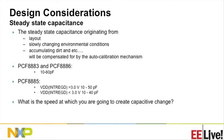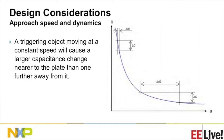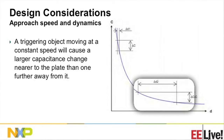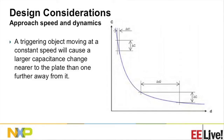The next question is the approach speed — how fast you are going to support an oncoming object. This is a very critical point: a triggering object moving at a constant speed is going to cause more change in capacitance near the sensor compared to when it's further away. So the same amount of capacitance change requires much more distance when the object is farther from the sensor. This is an important thing to keep in mind when designing your application.